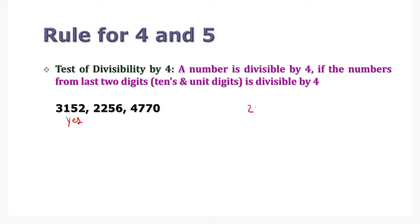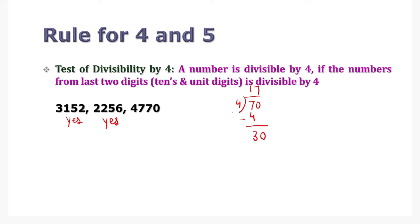What about 2256? The last two digits are 56, and 56 is divisible by 4, so 2256 is divisible by 4. What about 4770? The last two digits for 4770 are 70. 70 divided by 4 gives 17 remainder 2. Since there is a remainder, 4770 is not divisible by 4.